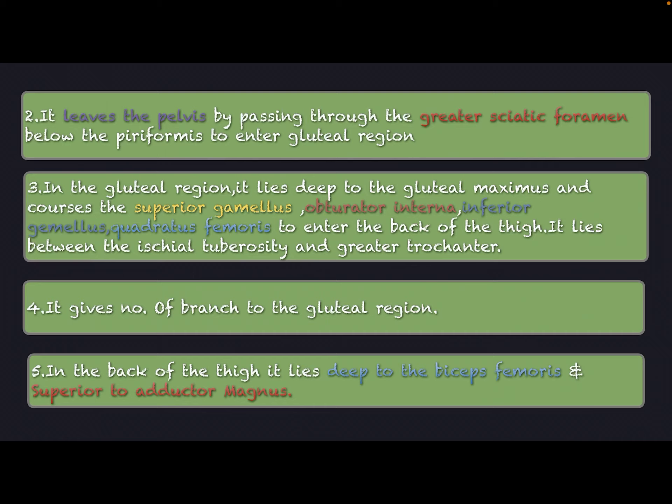In the gluteal region, it lies deep to the gluteus maximus and crosses the superior gemellus, obturator internus, inferior gemellus, and quadratus femoris to enter the back of the thigh. It lies between the ischial tuberosity and greater trochanter, and gives a number of branches in the gluteal region.